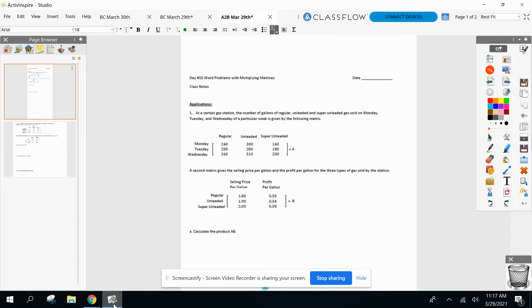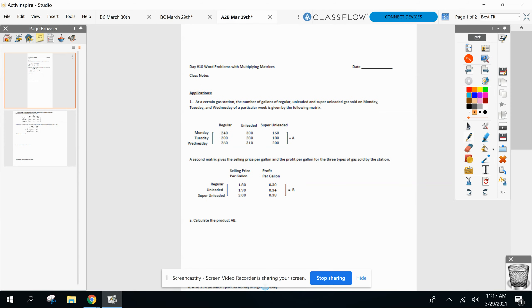So you see on Monday, we sold however many gallons of regular unleaded and super unleaded. And then in B is how much I sell it for and how much profit I get off the different types. First one, part A, here we go. Calculate A times B. All right, calculate matrix A times matrix B.